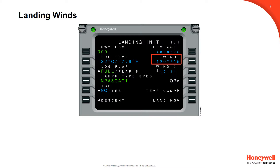Wind direction and speed are shown on line 2 right. The default values are dashes until the pilot enters the winds obtained from the ATIS or landing field weather information broadcast. After the landing field winds are entered, the headwind and tailwind component speeds are shown with directional arrows on line 3 right. Values are rounded to the nearest knot. The wind component should be checked to make sure that winds are within acceptable limits.